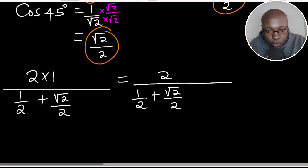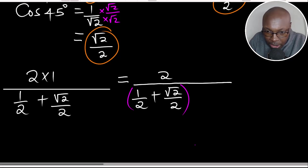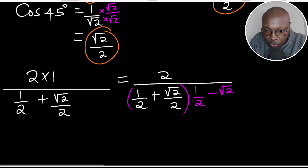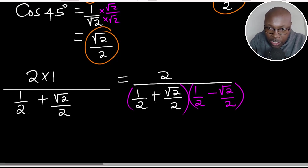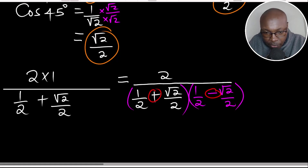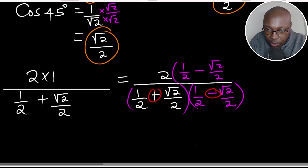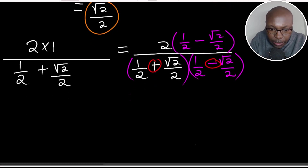This is the point where we rationalize the denominator. We multiply both the numerator and the denominator by the conjugate of the denominator. The conjugate of (one half plus root 2 over 2) is (one half minus root 2 over 2) — the only change is the sign between the terms. So we multiply both numerator and denominator by (one half minus root 2 over 2).